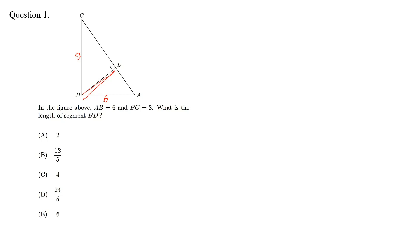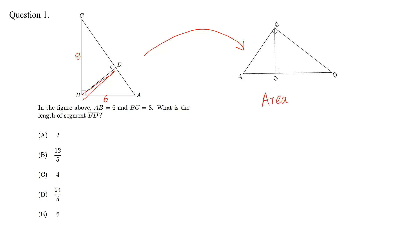First, we rotate this triangle. If we want to calculate the area of this triangle, the area will be equal to half of AC into the height of this triangle, which is BD. This is the required length of segment. So if we find the area and AC, then we can find BD.